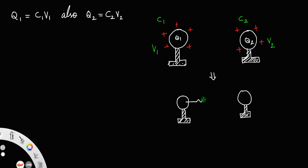If we connect these two spheres with a conducting wire of small or negligible resistance, the charge will redistribute. No longer does charge q1 stay on sphere 1 and q2 on sphere 2. Let q be the total charge, so q equals q1 plus q2, and redistribution happens depending upon the size of the spheres. When connected, both spheres will attain a common potential v, meaning the potential of both spheres will be the same.